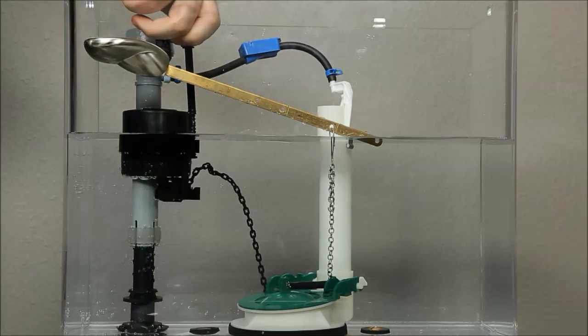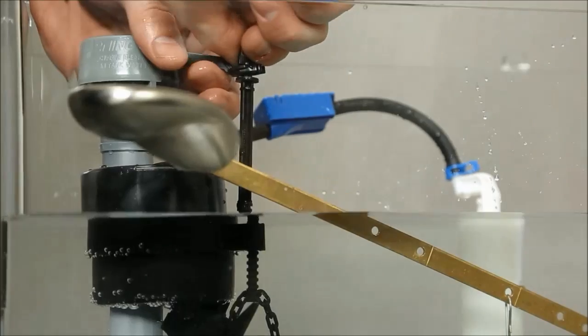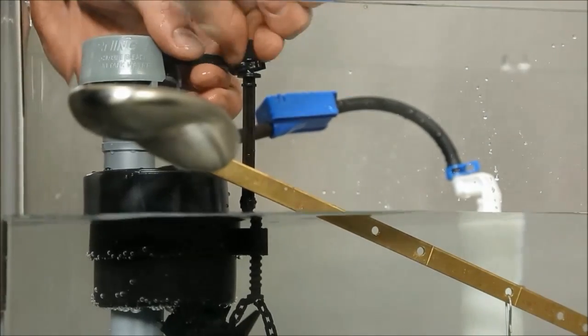Turn the adjustment rod to the side of the fill valve clockwise to raise the water level and counterclockwise to lower the water level.